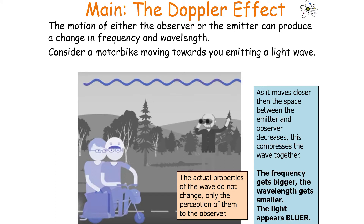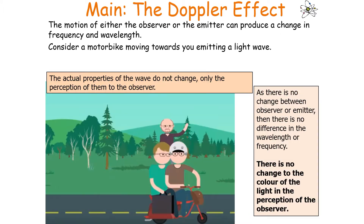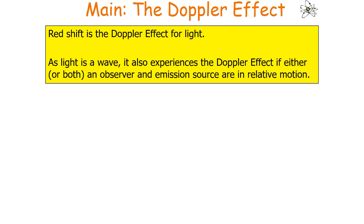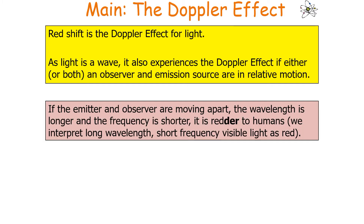Considering the Doppler effect in terms of light: as an object moves towards you, the space between emitter and observer decreases, compressing the wave — frequency gets bigger, wavelength gets smaller, and the light appears bluer. If there's no relative change, there's no difference in wavelength or frequency and no change of colour. If the source moves further apart, the wave spreads out — frequency gets lower, wavelength gets bigger, and the light appears redder. Redshift is the Doppler effect for light. If the emitter and observer are moving apart, the wavelength is longer and frequency shorter, so it appears redder.